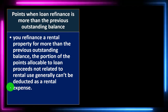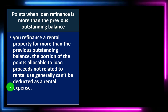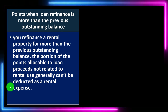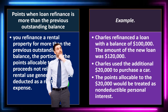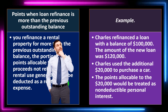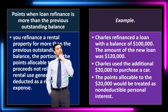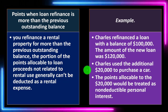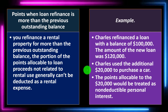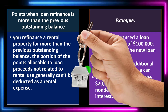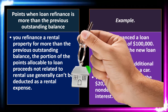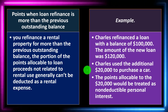Points when a loan refinance is more than the previous outstanding balance: if you refinance a rental property for more than the previous outstanding balance, the portion of the points allocable to loan proceeds not related to rental use generally can't be deducted as rental expense. Example: Charles refinanced a loan with a balance of $100,000; the new loan was $120,000. Charles used the additional $20,000 to purchase a car. The points allocable to the $20,000 would be treated as non-deductible personal interest — once you use the home as collateral to buy something other than the property, it complicates the deductibility.